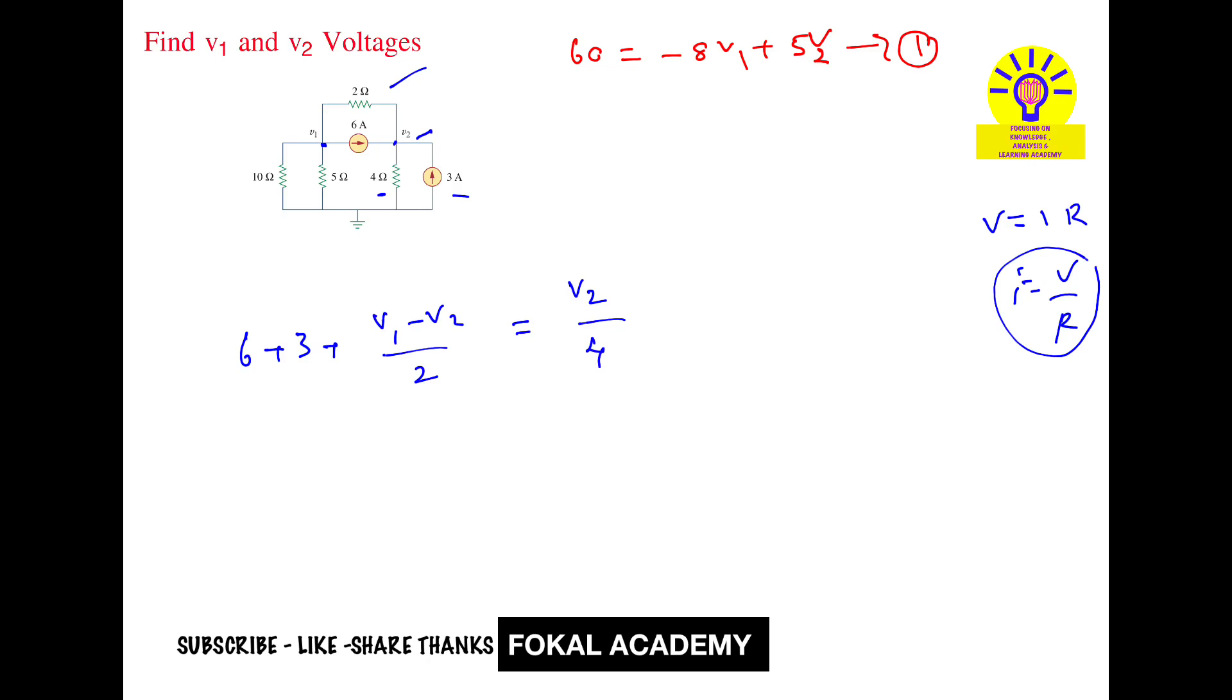Simplify with LCM of 2: 18 plus v1 minus v2 equals v2 by 4. Multiplying by 2: 36 plus 2v1 minus 2v2 equals v2. From this we get 36 equals minus 2v1 plus 3v2. This is equation 2.